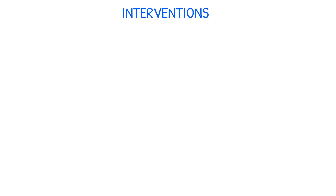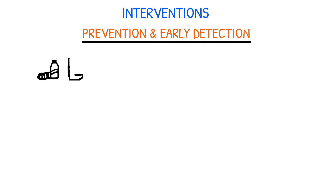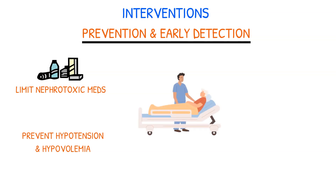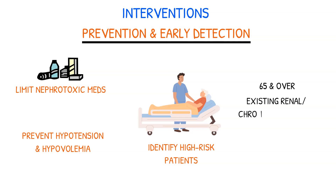Some of the most important nursing interventions for acute kidney injury are prevention and early detection. These measures include limiting exposure to nephrotoxic medications, preventing lengthy periods of hypotension and hypovolemia, and identifying high-risk patients. High-risk individuals include those who are age 65 or over, and have existing renal and chronic conditions such as chronic kidney disease, heart failure, or diabetes.